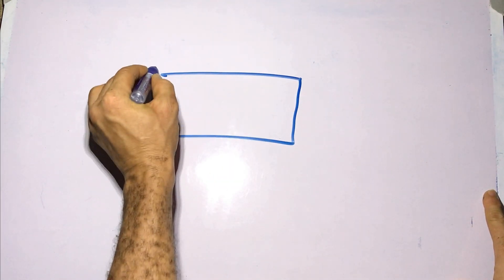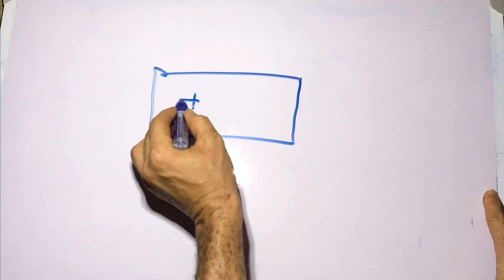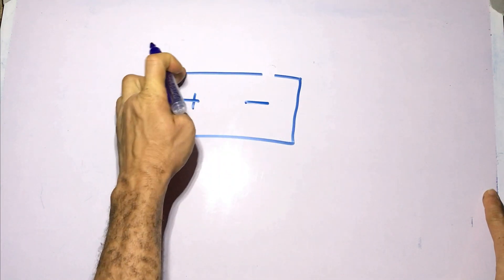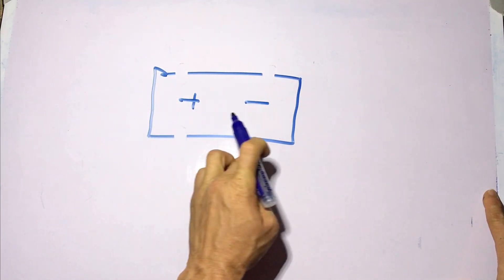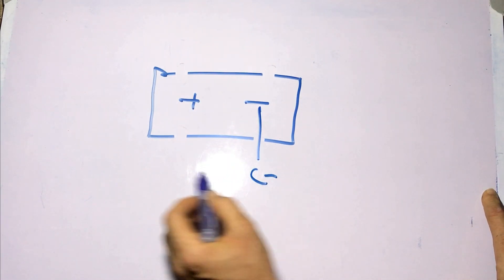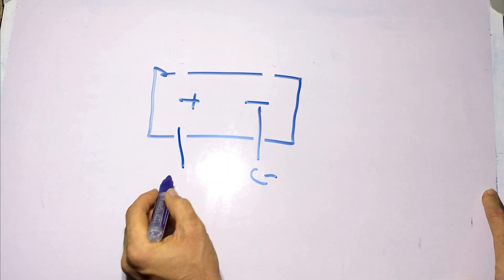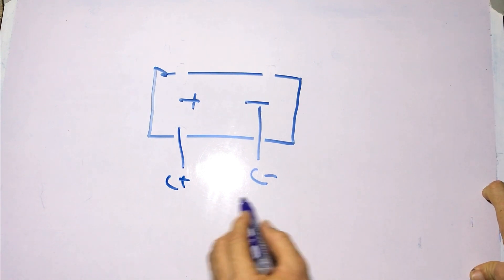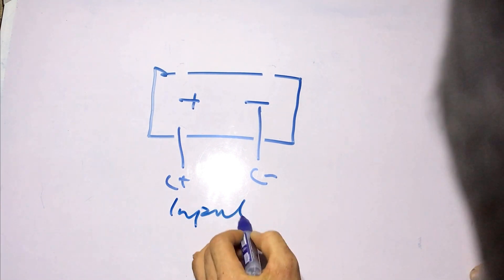So here is our BMS and we've got our plus here minus here. So we're splitting this connection into two connections. We have C minus here and C plus here. We call this our input, our input or charge.